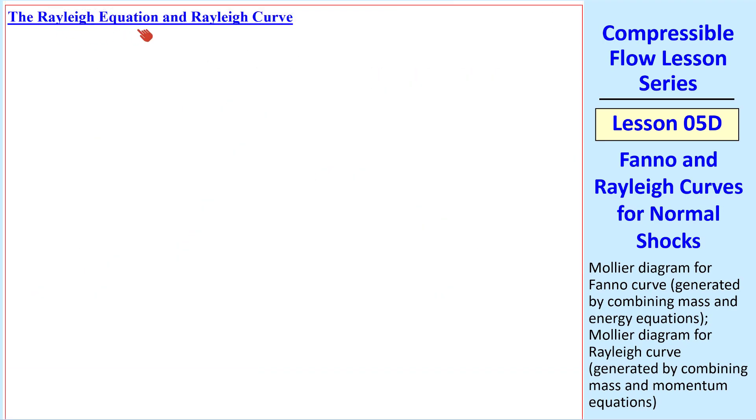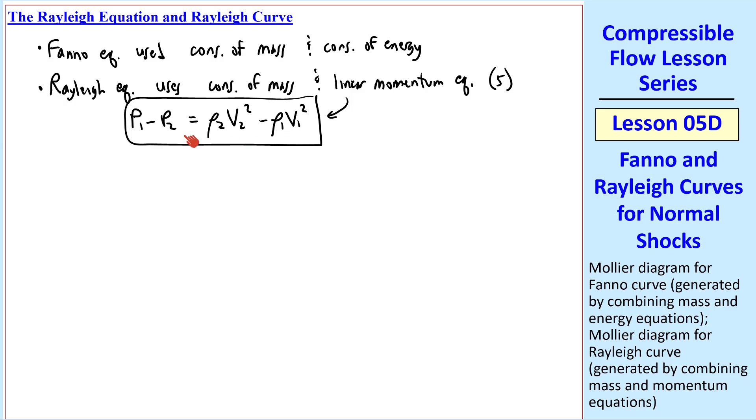Now let's discuss the Rayleigh equation and the Rayleigh curve. The Fanno equation was derived by using conservation of mass and conservation of energy. The Rayleigh equation is similar, but it uses conservation of mass and the linear momentum equation, which is our equation 5, which I repeat here. And I note that we already used conservation of mass in deriving this equation. So Fanno and Rayleigh are kind of complementary. We use two of our three equations, mass and energy, for the Fanno equation, without using the momentum equation, but Rayleigh uses mass and momentum, without using the energy equation.